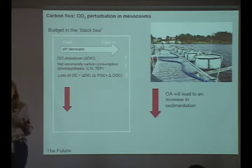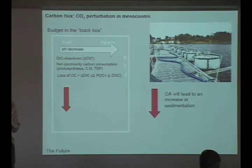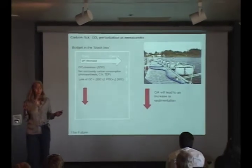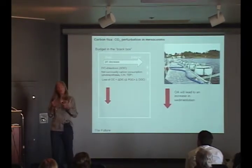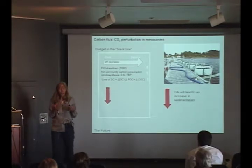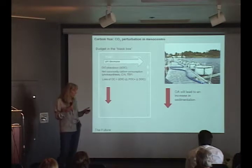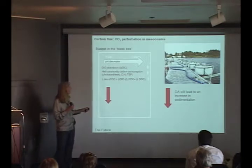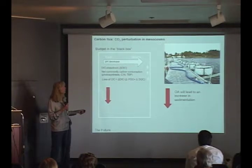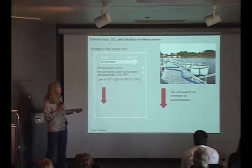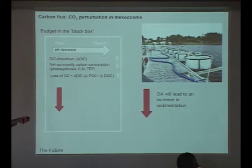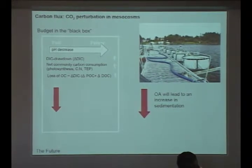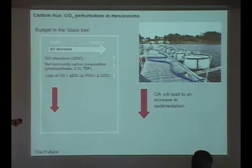Part of the problem with these experiments is we have one species in one condition — no competition between species, nothing natural about it. It shows how the organism itself reacts but not how it would react in a natural environment. To remedy that we tried to do experiments in so-called mesocosms — huge tanks, basically bags hanging in the ocean filled with water. We put clear tents over them and change the CO2 concentration in the tents, essentially doing experiments in a more natural setting.